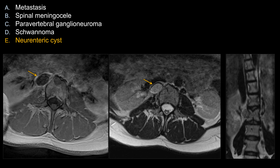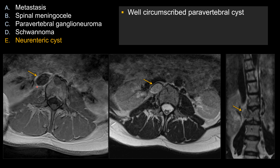The best answer here is going to be E, neuroenteric cysts. Let's look at some of the features that make choice E the best answer. There is a well-circumscribed paravertebral mass lesion. You can see that it's dark on T1 and bright on T2, so it looks quite cystic.